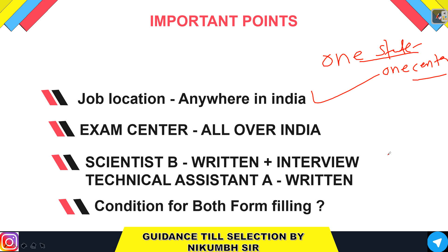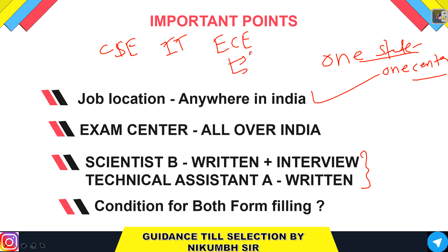A very common query is whether you can fill both forms. The answer is yes, but with a condition. There are three branches in STQC: CS, IT, and EC. You need to apply to both positions from the same branch. For example, if you are from EC, then you apply for Scientist B EC and STA EC. You cannot mix branches between the two posts.